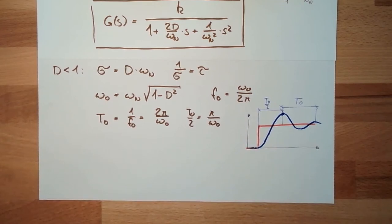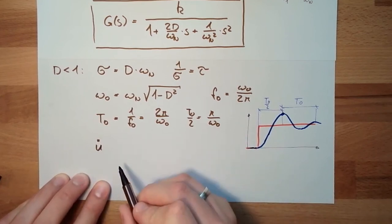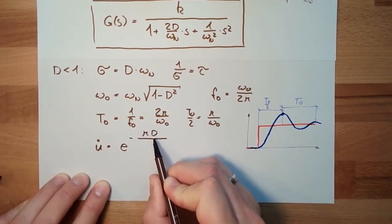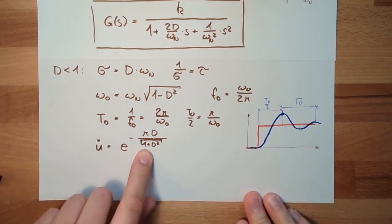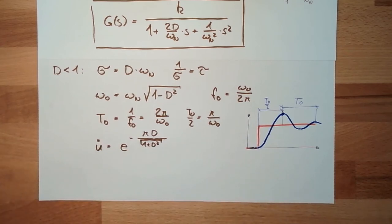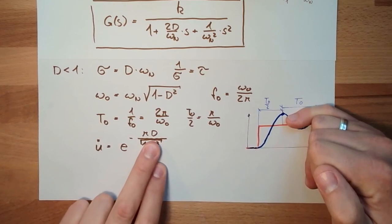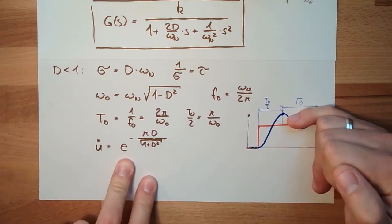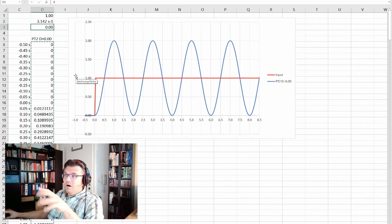And how big is this overswing? This can also be calculated. The overswing u — German Überschwingen — is e raised to the power of a formula involving d and the square root of (1 minus d²). This is how many percent the first overswing is. If damping is zero, the system is not damped at all and the output will be doubled.